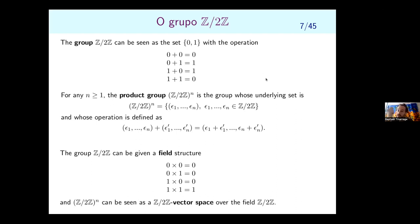Z/2Z admits a stronger structure than just a group — it can be given a field structure with multiplication, and the multiplication table has only one valid choice. Because we have a field, we can consider vector spaces over it. Normally we learn vector space theory over ℝ or ℂ, but the exact same theory works over any field. The field we use today is Z/2Z, and the product group Z/2Z^n is a vector space over Z/2Z.